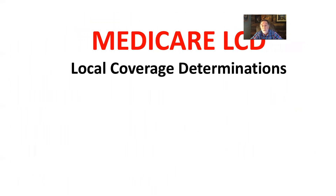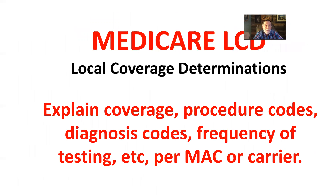Medicare has their own set of rules when it comes to whether they're going to cover something, which may or may not be in line with commercial insurances. They're called local coverage determinations. Some states will have an LCD on some codes while other states may not. The LCDs will tell you what's covered, when it's covered, what procedure code, what diagnosis codes are required on the claim, and how frequently you can do the testing.